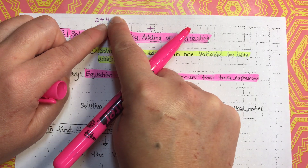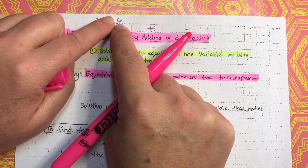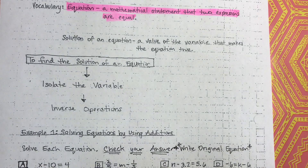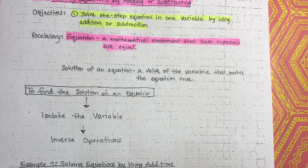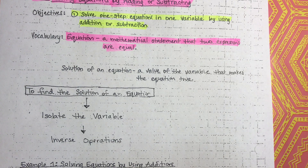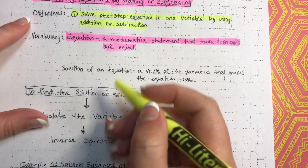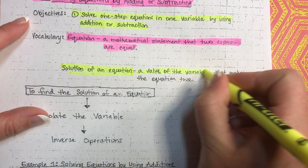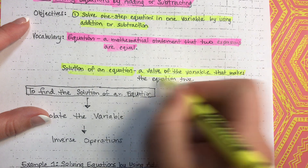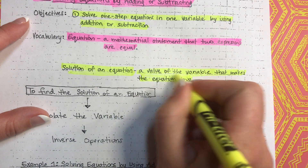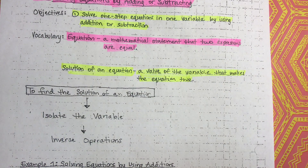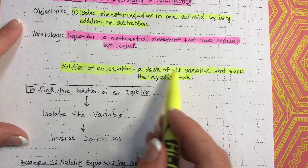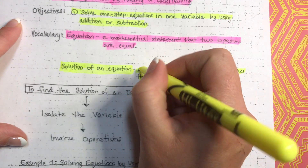Up here, 2 plus 4 is an expression. 6 is an expression. They're two expressions that are equal to each other. And then the solution of an equation is a value of the variable that makes the equation true. We will look at that in some different examples — the value of a variable that makes an equation true.